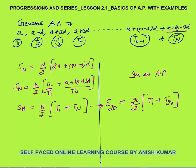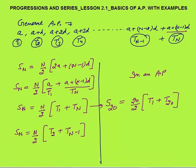Not only first plus last — Sn can also be calculated as n by 2 times t2 plus tn minus 1, that is the second term from the beginning and the second term from the end. t1 is the first term from the beginning and tn is the first term from the end. You add them and multiply by n by 2, you will get the sum of first n terms.